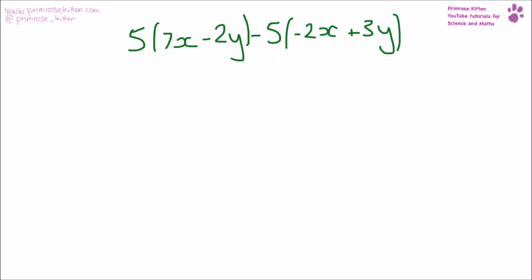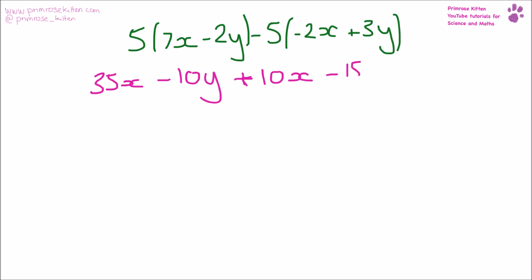So we need to do 5 times 7x which is 35x, minus 10y. Then because we're multiplying minus five, minus times minus is plus, giving plus 10x minus 15y. Collecting all those things together gives us 45x minus 25y.